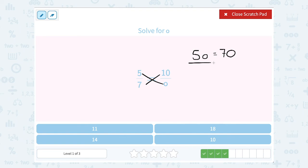To get o by itself, we're going to divide by 5 on both sides. And 70 divided by 5 gives us 14. So o equals 14.